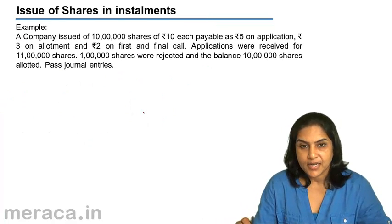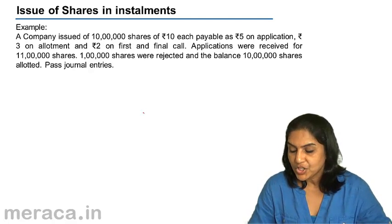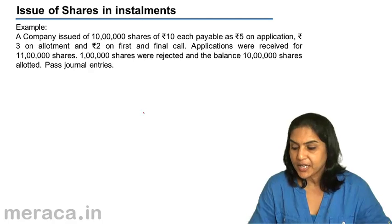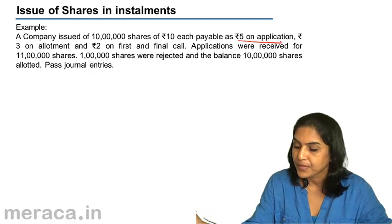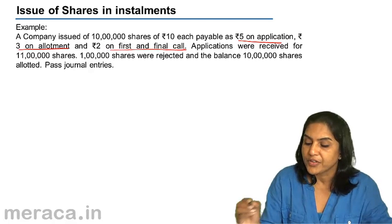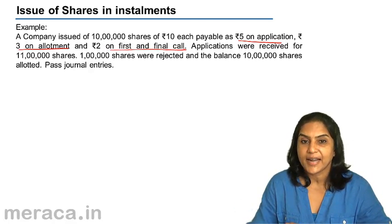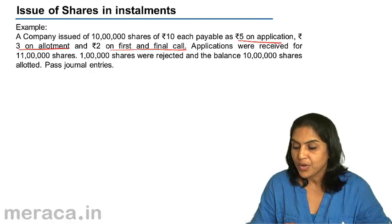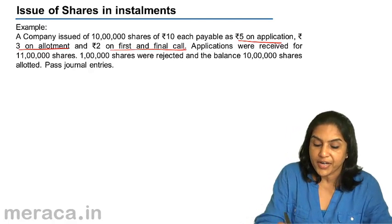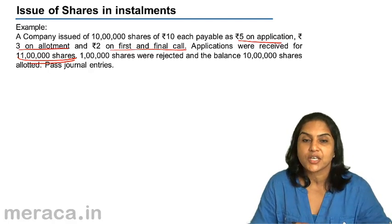A small example: a company issued 10 lakh shares of ₹10 each, payable as ₹5 on application, ₹3 on allotment, and ₹2 on the first and final call — totalling ₹10, the full face value. Applications were received for 11 lakh shares. 1 lakh shares were rejected and the balance 10 lakh shares were allotted.